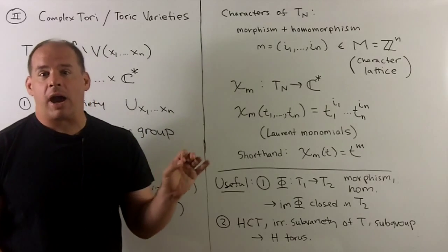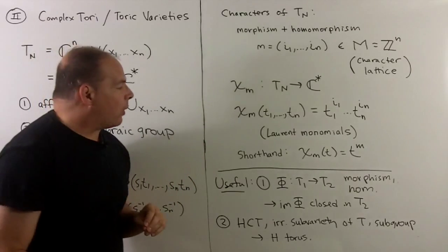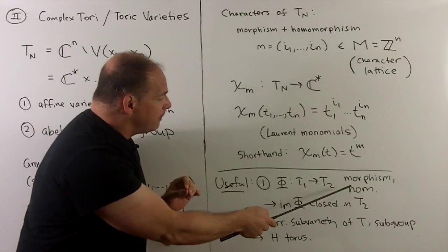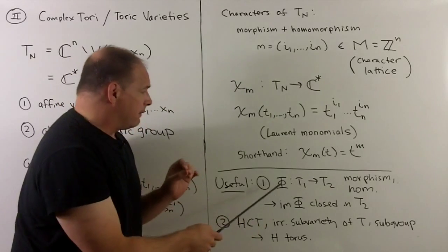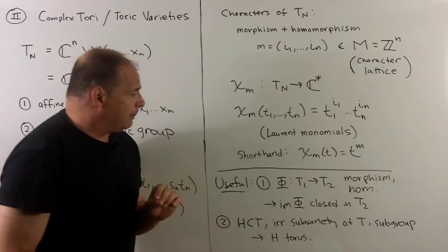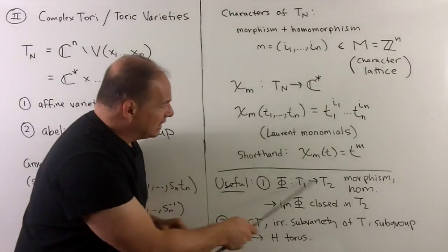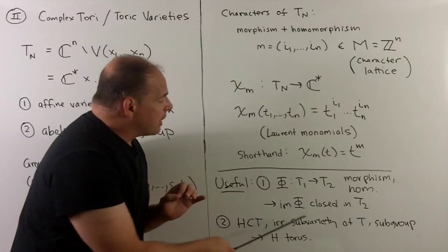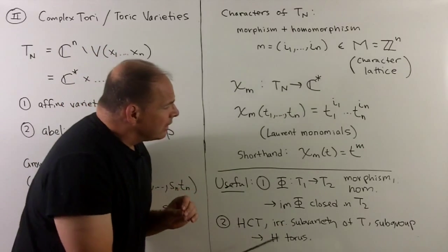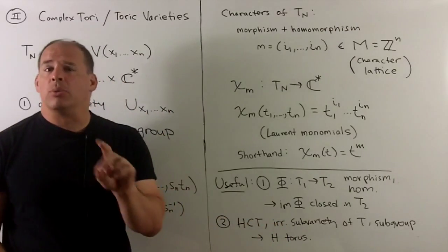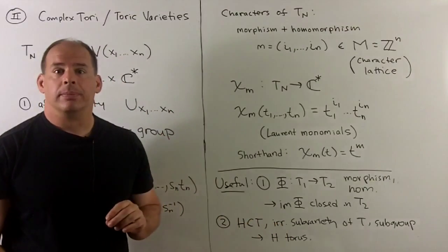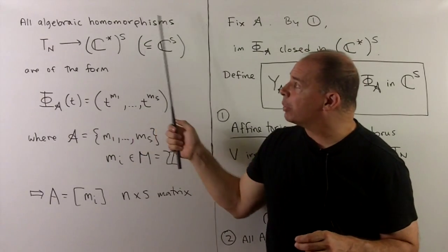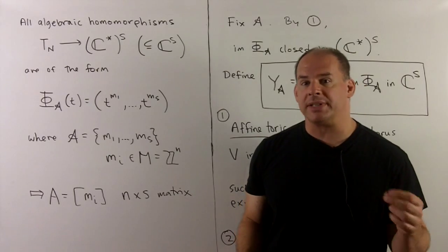Two important facts about tori we'll come back to. First, if I have a map between two tori which is both a morphism and a homomorphism, then the image of this map will be a torus closed inside of T₂. Also, if I have any irreducible subvariety of a torus that's also a subgroup, then that subgroup H will also be a torus. In turn, all algebraic homomorphisms between complex tori are built out of characters.